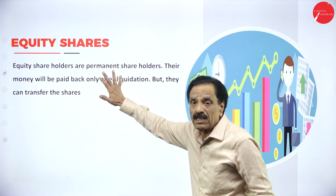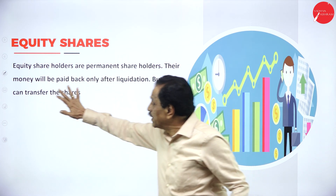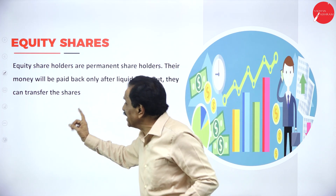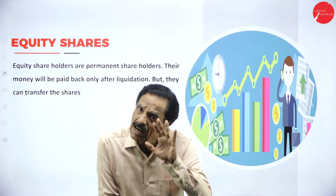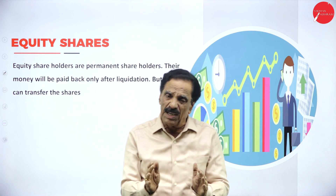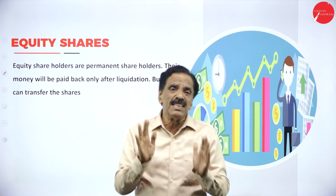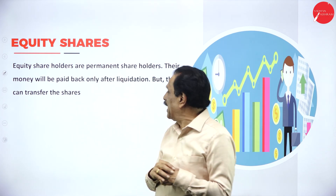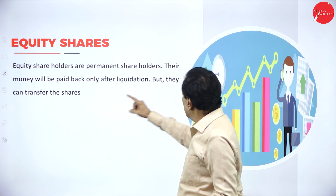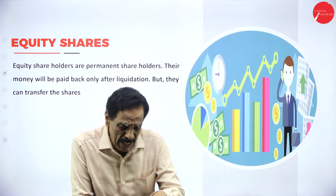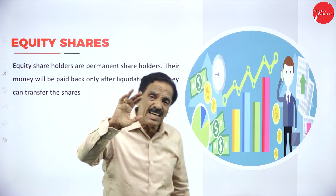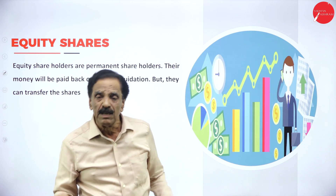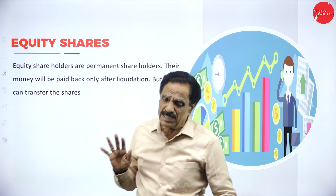Equity shareholders are permanent shareholders. Their money will be paid back only after liquidation. However, they can transfer the share — if X is a shareholder and does not want to continue, he can transfer the share to Mr. Y, and Y becomes the shareholder, with the consent of the company.